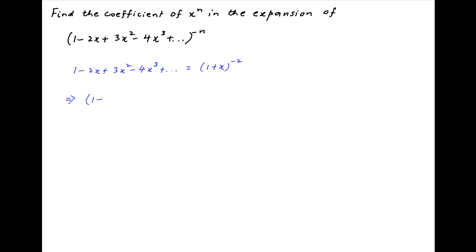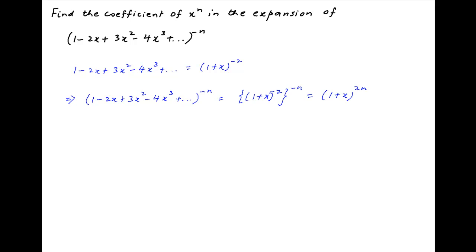Raising both sides to the power minus n, we get (1 minus 2x plus 3x squared minus 4x cubed plus and so on) raised to the power minus n, which is the expression given in the problem, equal to (1 + x) raised to the power minus 2, raised to the power minus n, which equals (1 + x) raised to the power 2n.